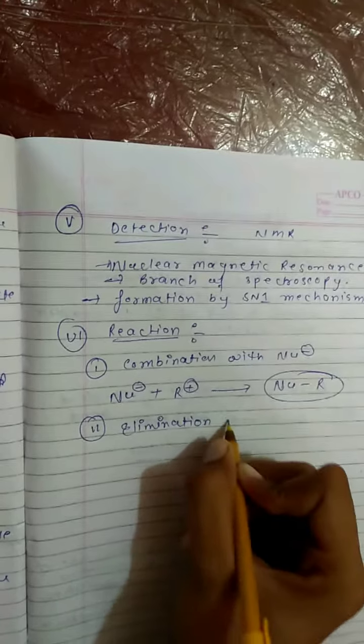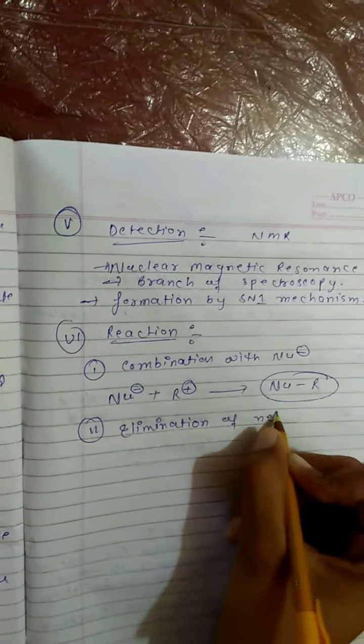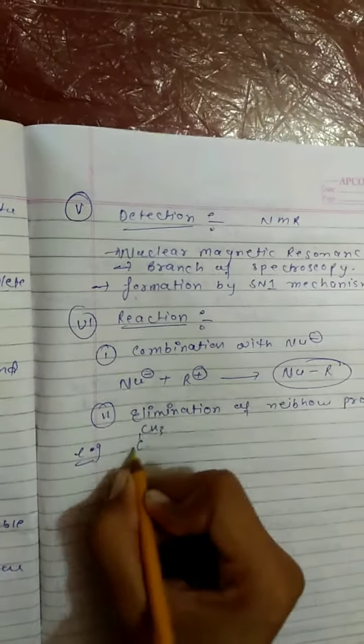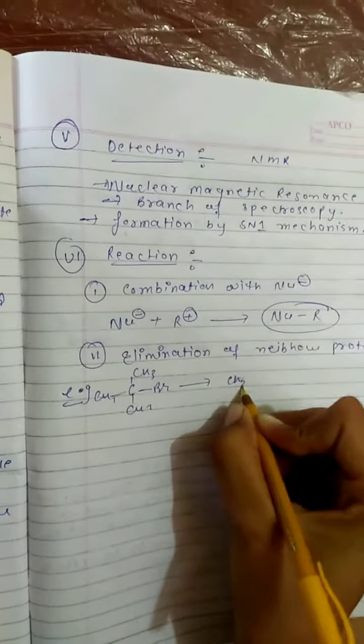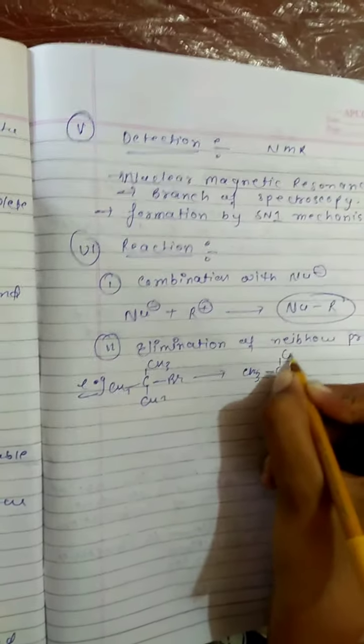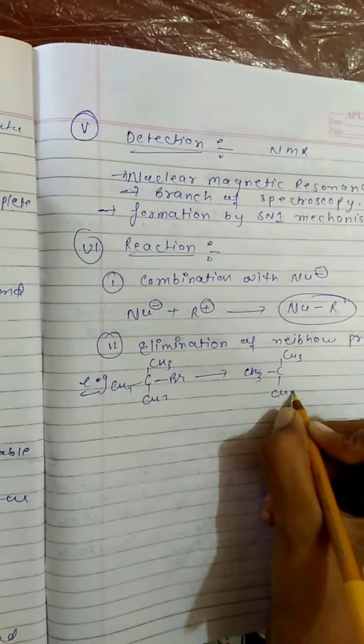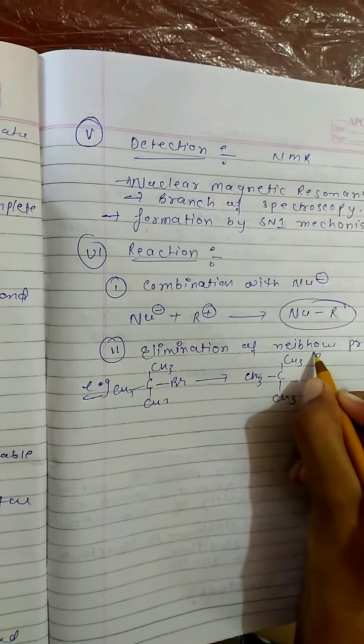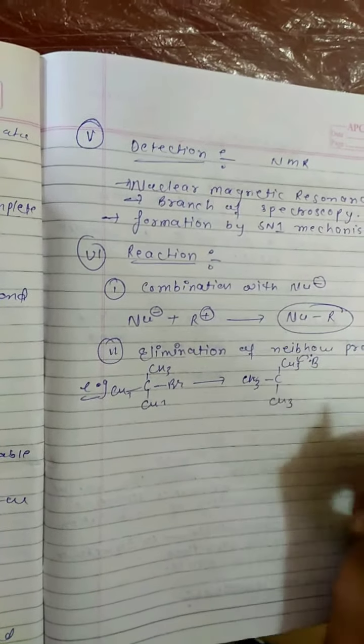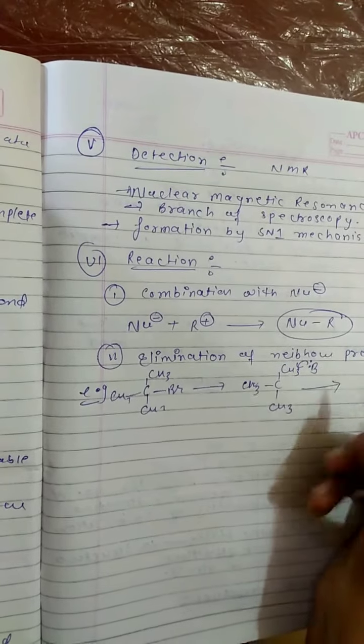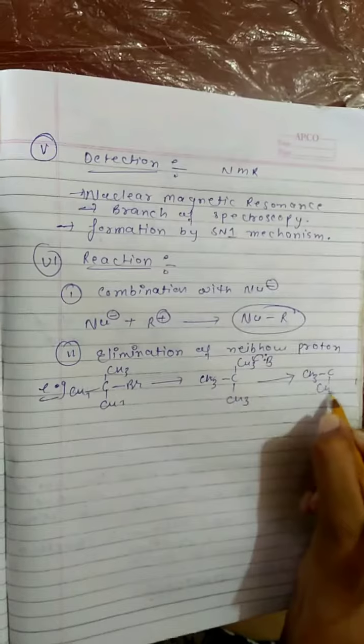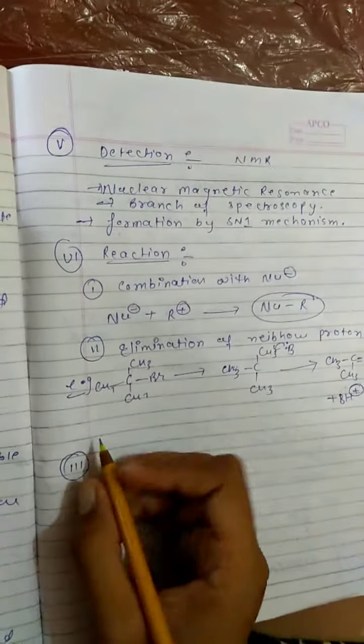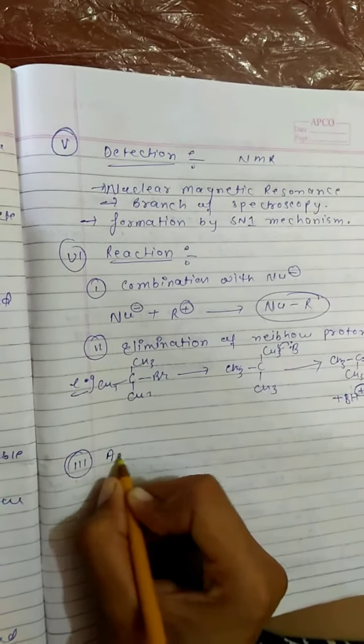Now the elimination of neighboring proton. Take an example of tertiary butyl bromide. As we know that in heterolytic cleavage, leaving group takes the electrons, so carbon atom is positively charged. And then base removes the neighboring proton and it becomes an unsaturated compound.